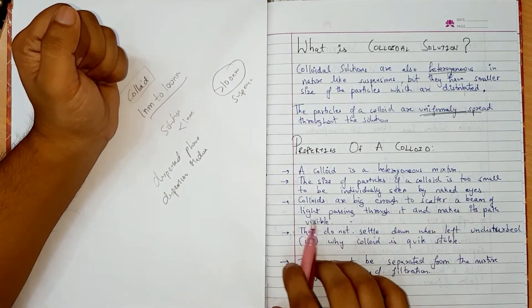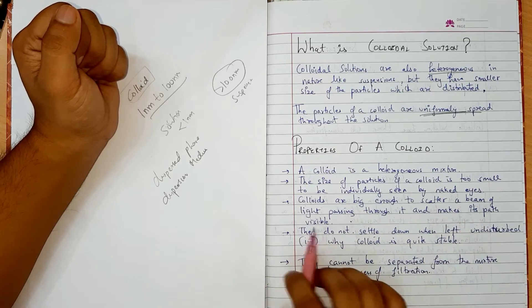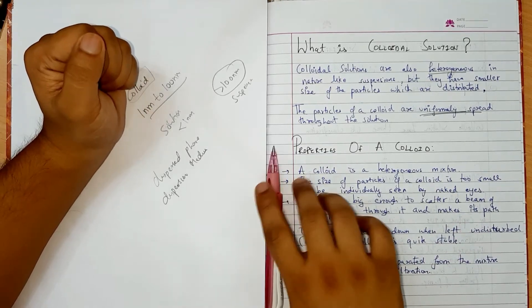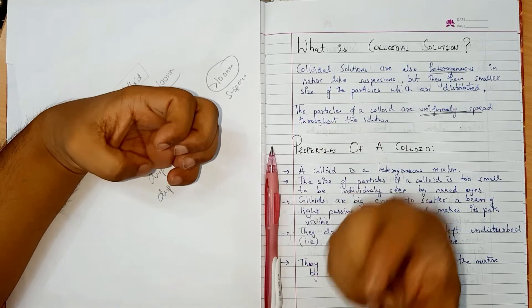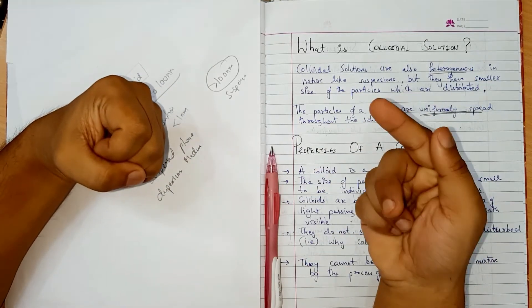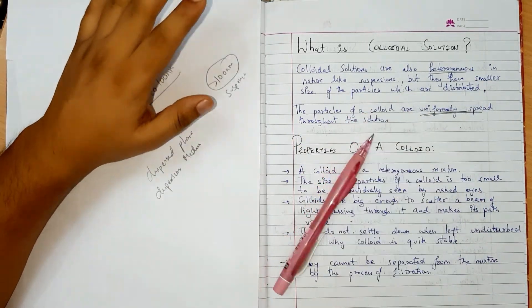Third point, colloids are big enough to scatter a beam of light passing through it and make its path visible. The colloid particles, it is not so small that it cannot scatter light. So the light scatters. This phenomenon is called Tyndall effect.